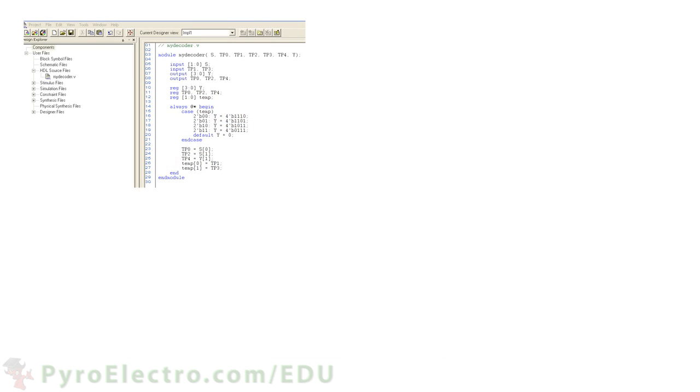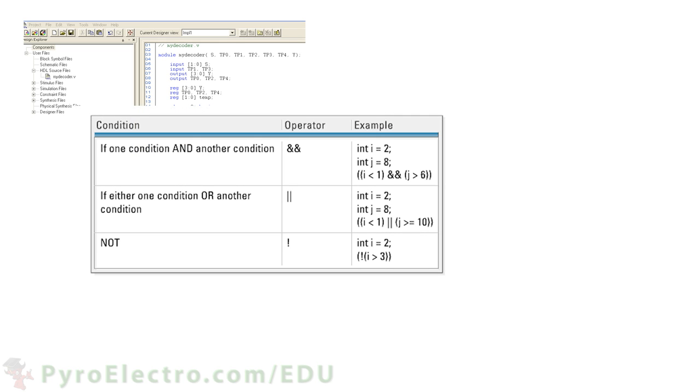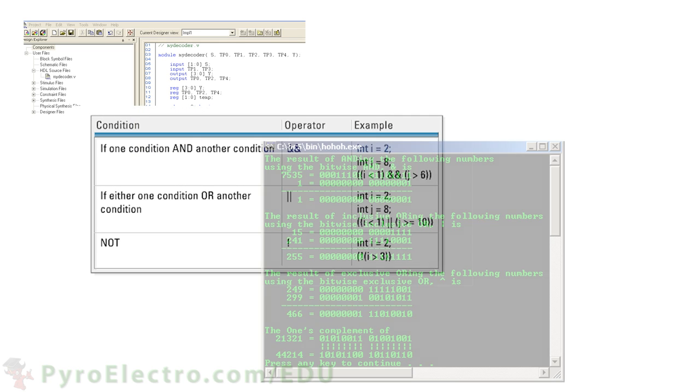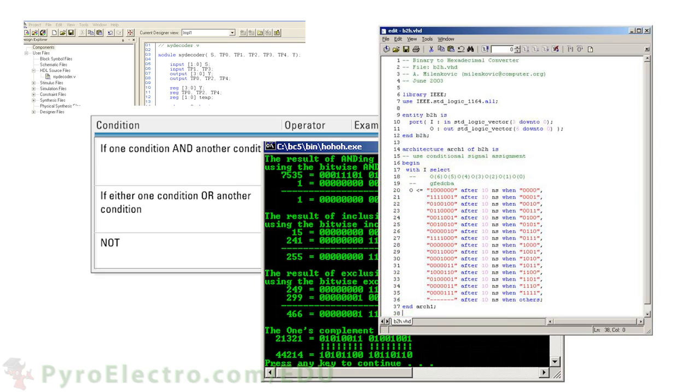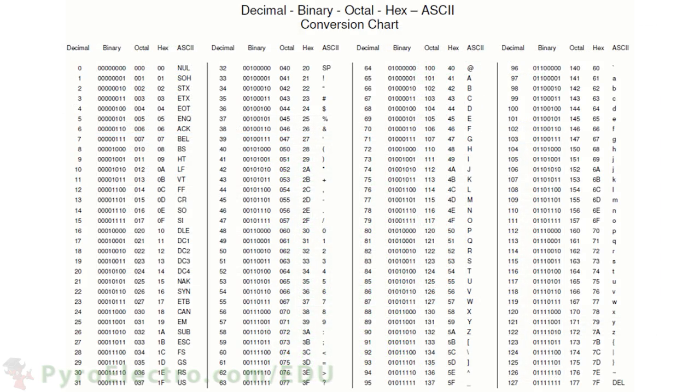On the flip side, inside of the computer engineering world, binary is used everywhere. A quick and simple example are how letters, numbers, and symbols are encoded for transport through the internet. A system called ASCII, short for American Standard Code for Information Interchange, can encode the entire English alphabet, numbers, letters, and symbols into 128 unique numbers.